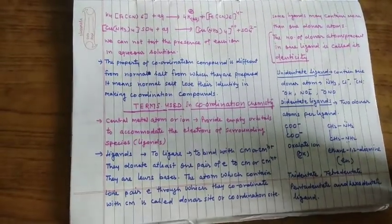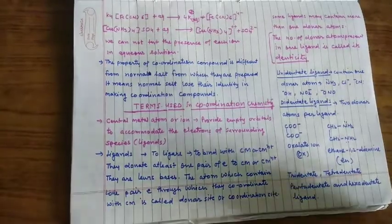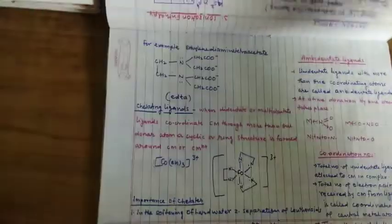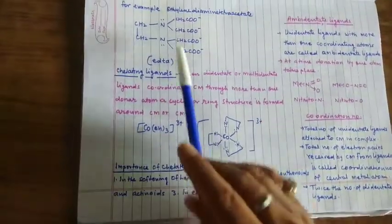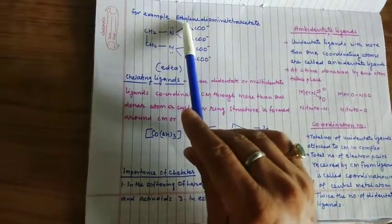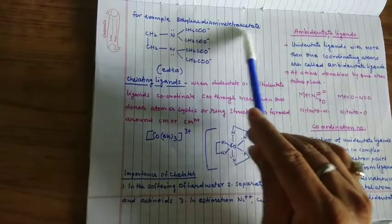कई बार example पूछा जाता है, question पूछा जाता है give one example of hexadentate ligand और उसका एक use बताइये। तो the best example of hexadentate ligand is EDTA ethylene diamine tetraacetate।